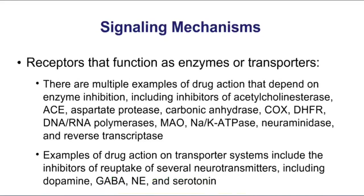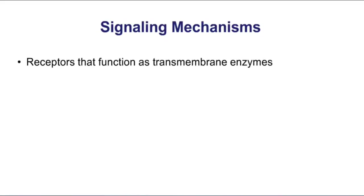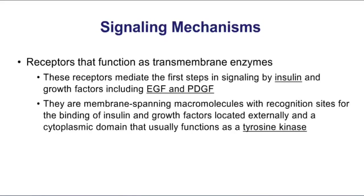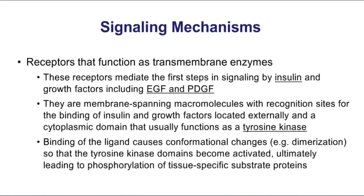We have receptors that function as enzymes or transporters. Many of those are important and show up on your Step 1 exam — we're going to deal with those one at a time as we go through the remainder of the lectures. Importantly, we have receptors that function as transmembrane enzymes — this is how insulin signals, along with a couple of growth factors: epidermal growth factor and platelet-derived growth factor. These pathways involve tyrosine kinase activity. The binding of the ligand causes a conformational change that causes these receptors to dimerize, the tyrosine kinase domains become activated, and then we phosphorylate tissue-specific substrate proteins.